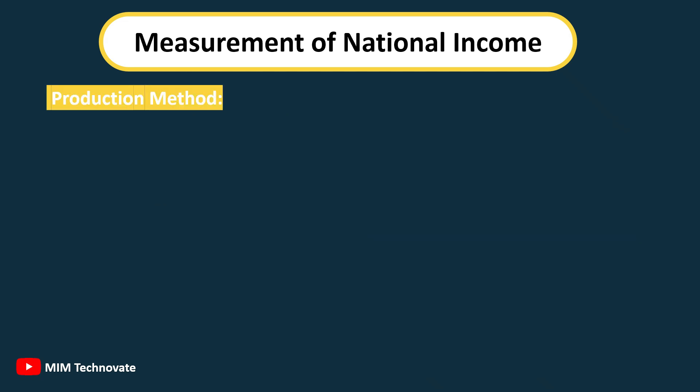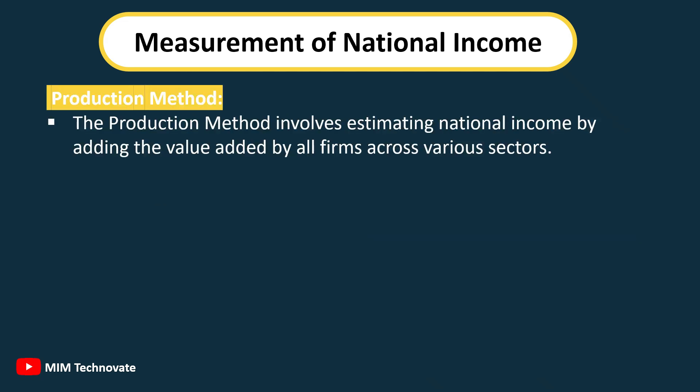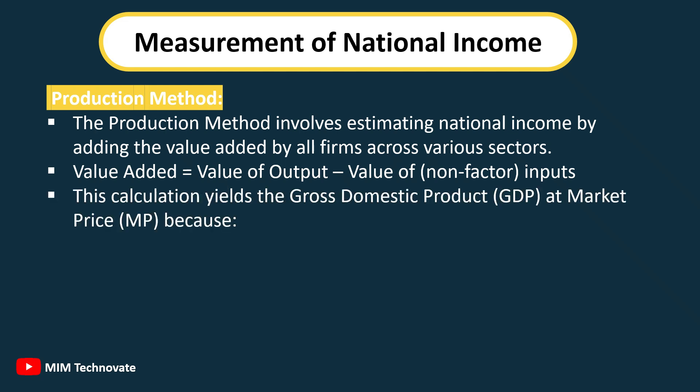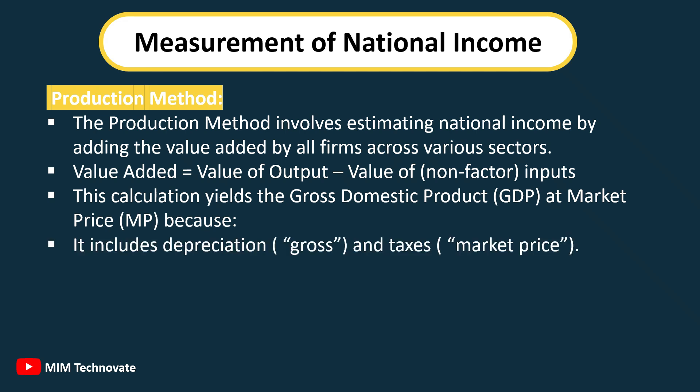Measurement of national income by the Production Method involves estimating national income by adding the value added by all firms across various sectors. Value Added equals value of output minus value of non-factor inputs. This calculation yields the Gross Domestic Product, GDP, at market price, MP, because it includes depreciation (gross) and taxes (market price).